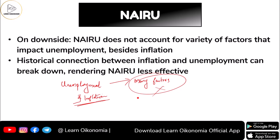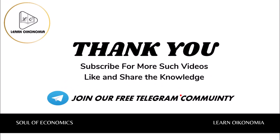There exists a historical connection between inflation and unemployment, which was established by the Phillips curve. However, as explained when covering the long-run Phillips curve, the original short-run trade-off between inflation and unemployment broke down after some point in time. This breakdown of the short-run Phillips curve has made NAIRU less effective. The historical connection between inflation and unemployment can break down, rendering NAIRU less effective. That's all about the non-accelerating inflation rate of unemployment.